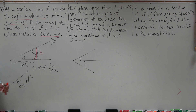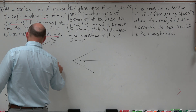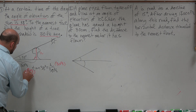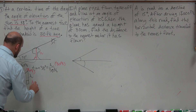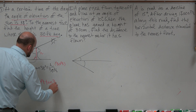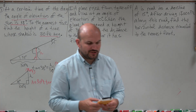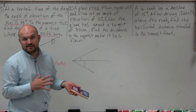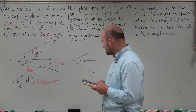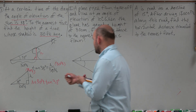I'll write the trigonometric expression: tangent of 38 degrees equals opposite over adjacent, so h over 30 feet. To solve for h, I multiply both sides by 30 feet. So h equals 30 feet times the tangent of 38 degrees. Going to the calculator — make sure you're in degree mode — tangent of 38, then times 30, rounds to 23 feet.